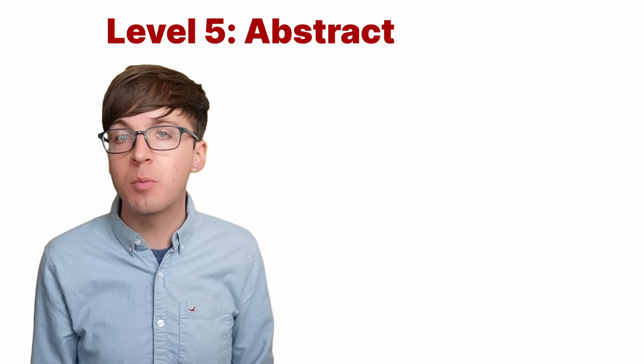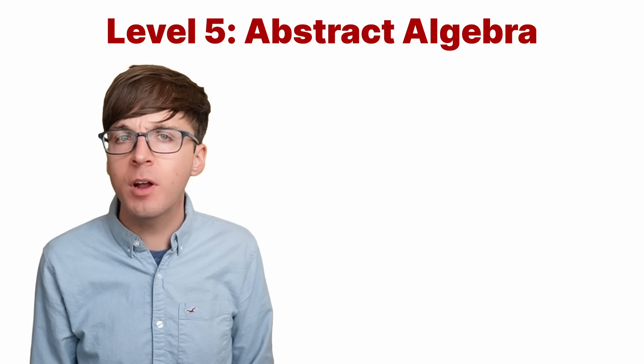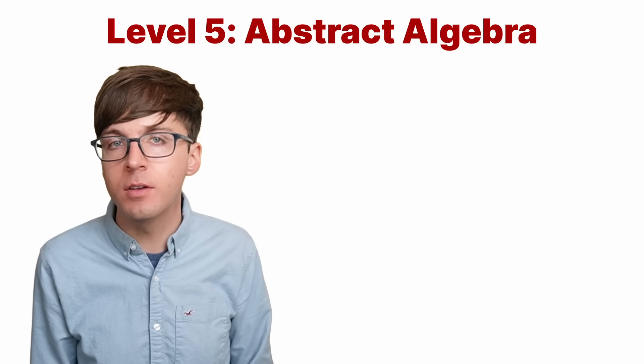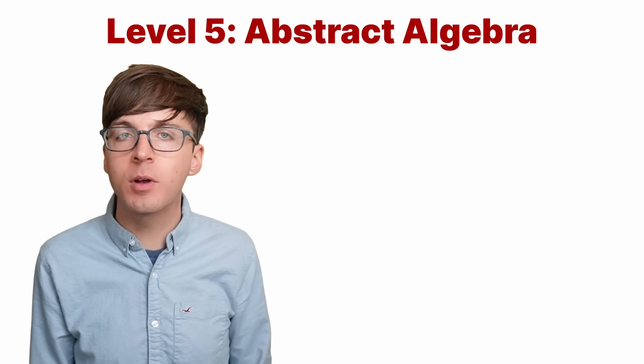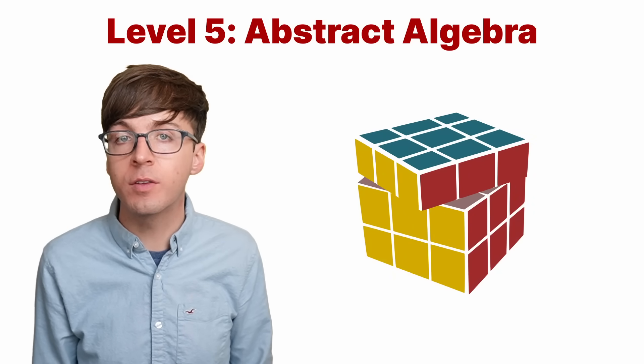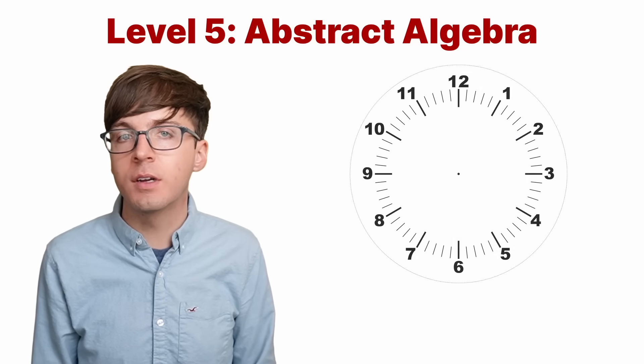For level five, let's dive into the world of abstract algebra. This branch of math explores the abstract algebraic properties of certain objects. For example, we might wonder about the algebraic properties of the moves of a Rubik's cube, or the hours on a clock.